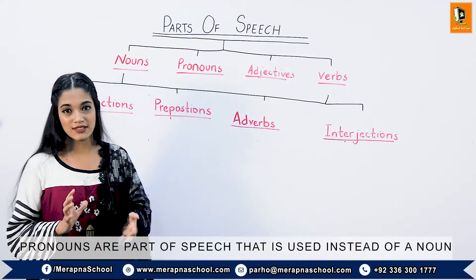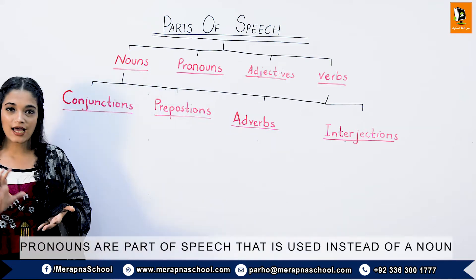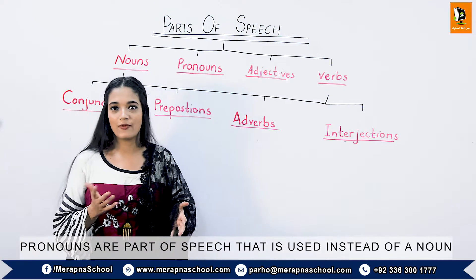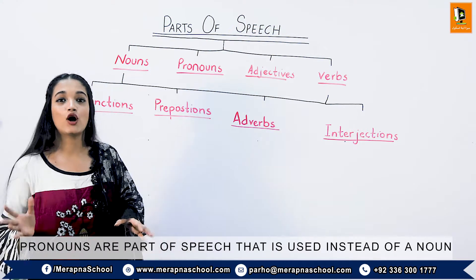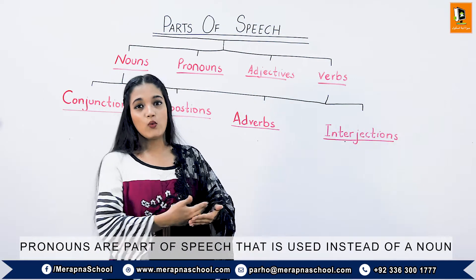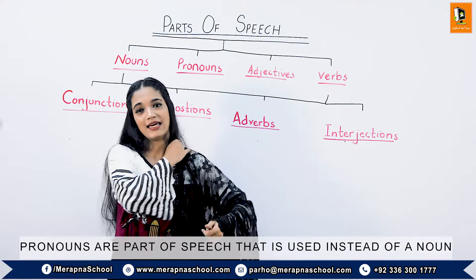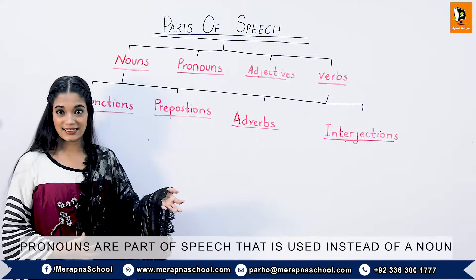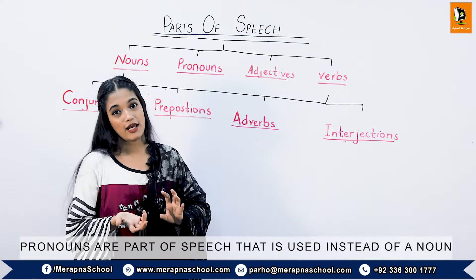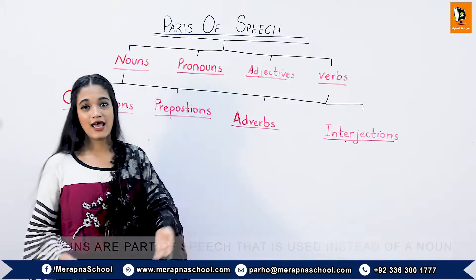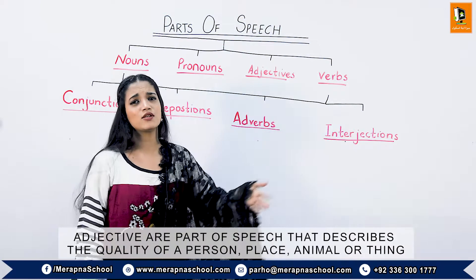Now moving on to pronouns. Pronouns are words that are used in place of nouns. When we talk about nouns, we mention a name of a person, place, animal, or thing. But when we write an essay or two sentences about a similar person, in the second sentence we use pronouns. For example, we mention 'Ali is a boy,' but in the second sentence we write 'He is a good boy.' The word 'he' shows a pronoun, and the word 'Ali' shows a noun.